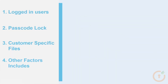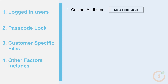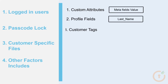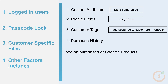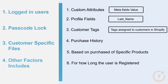Other factors include: custom attributes in meta fields, profile fields such as last name, customer tags, purchase history based on the purchase of specific products, for how long the user is registered, verify OTP to access the file, and many more.